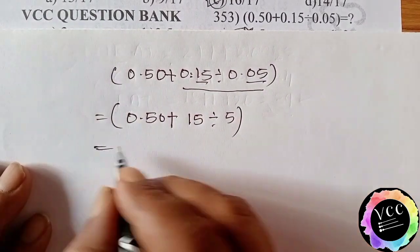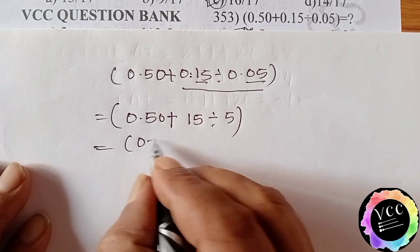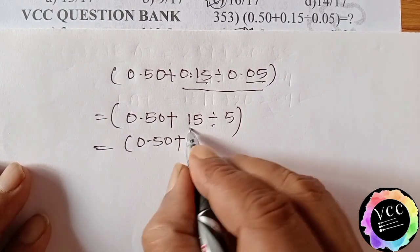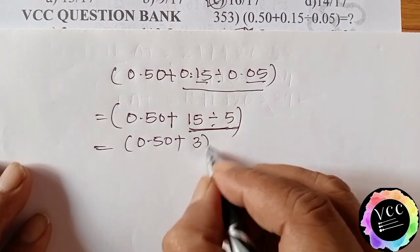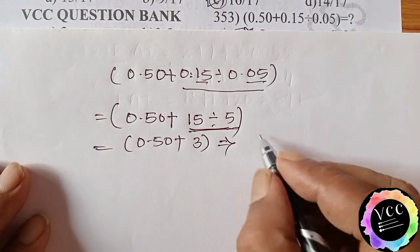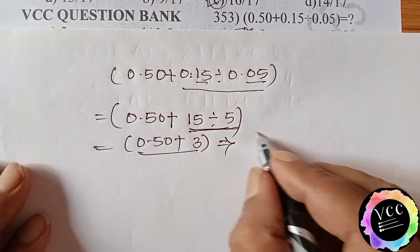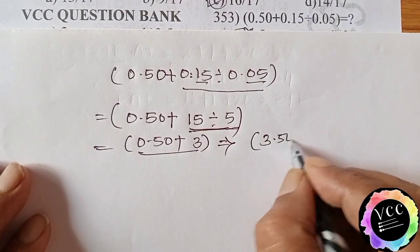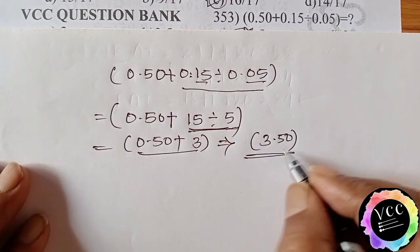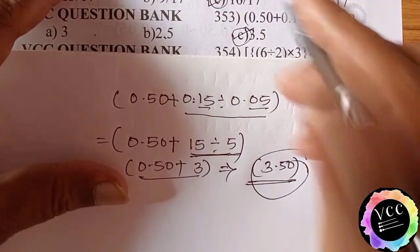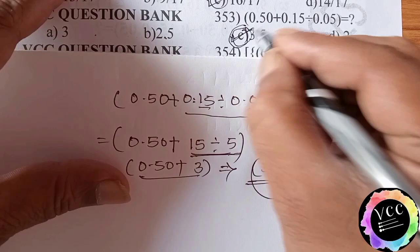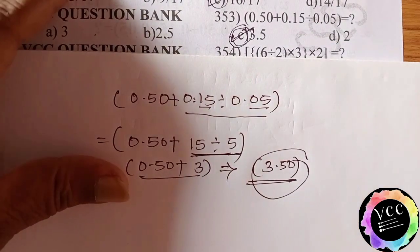So what happens here, 0.50 plus, here division will be done, means we get 3 as a quotient. Here when we add both, we get the answer 3.50. 3.50 means here the right answer is C option, 3.50 means 3.5.